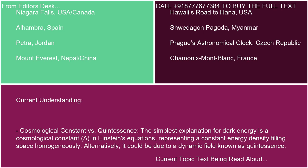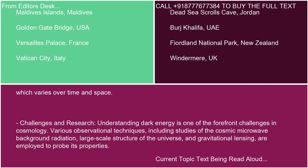The simplest explanation for dark energy is a cosmological constant, lambda, in Einstein's equations, representing a constant energy density filling space homogeneously. Alternatively, it could be due to a dynamic field known as quintessence, which varies over time and space.